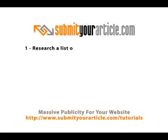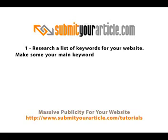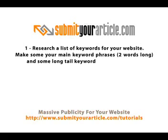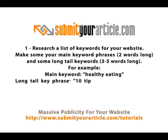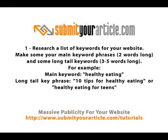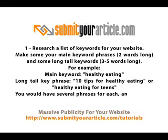Firstly, research a list of keywords for your website. Make some your main keyword phrases — they should be two words long — and some should be your long tail keywords, which should be three to five words long. For example, your main keyword could be 'healthy eating', while your long tail key phrase could be '10 tips for healthy eating' or 'healthy eating for teens'. You'd have several phrases for each, and your list may reach 20 or even 30 phrases in total.